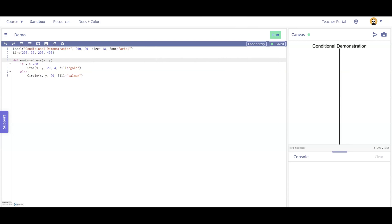It's sometimes difficult to wrap your head around exactly what a conditional is doing. So let's look at this demo really quickly. In the code, we see we have some preliminary stuff set up. As you can see here, we have a label up top, a line separating them, and we have mousePress defined. And in mousePress, we see that if X is greater than 200, we should see a star being drawn that's colored gold with four points. Otherwise, a circle.